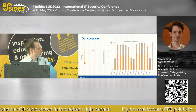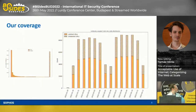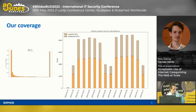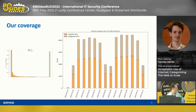How does this translate to our actual coverage? This plot shows, for every day, how many unique URLs were looked up by our customers for a 100k sample. The solid orange color means we had some kind of information about those URLs, and the dashed one means we have no clue what the customers are browsing — which is clearly not good. That's a blind spot.